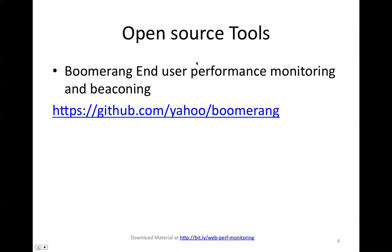There are a lot of open source tools. One of the really famous ones is Boomerang — it allows you to do end-user performance monitoring, it sends the data to your server at the URL that you specify, and it also detects your end user's bandwidth. Check it out — here is the link for Boomerang.